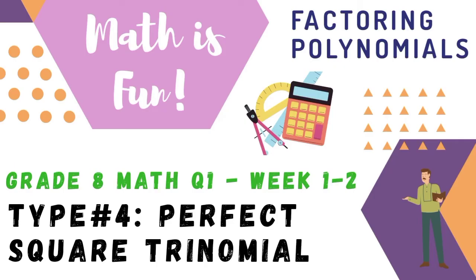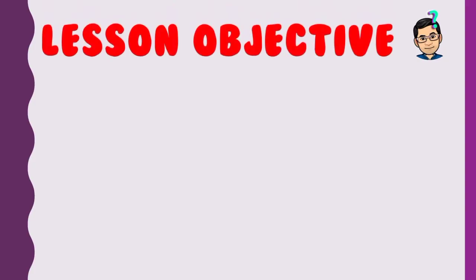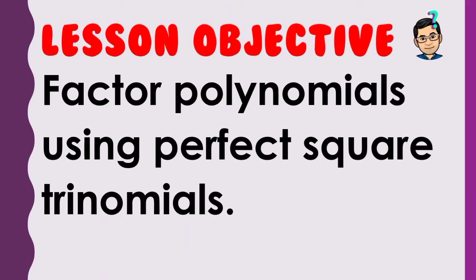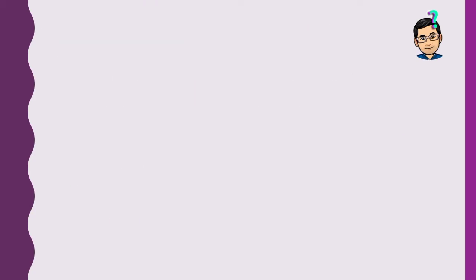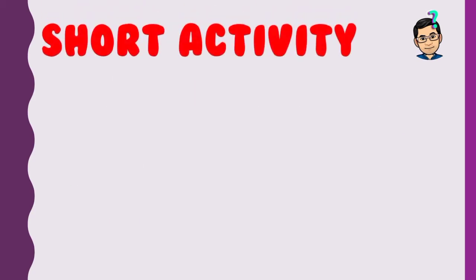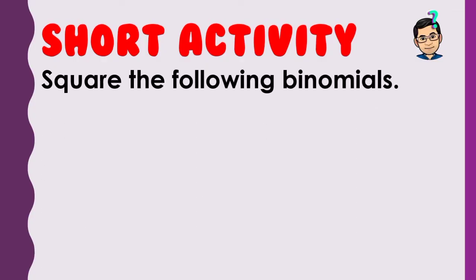Welcome back again, students, to another video lesson. After discussing the three types of factoring polynomials, let's have the fourth type: perfect square trinomial. Our lesson objective is to factor polynomials using perfect square trinomials. Before we proceed to our main discussion, let's have a short activity — square the following binomials.